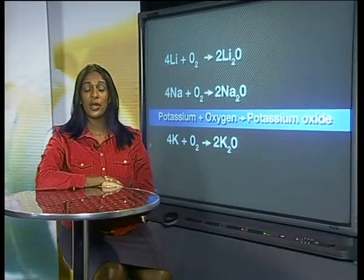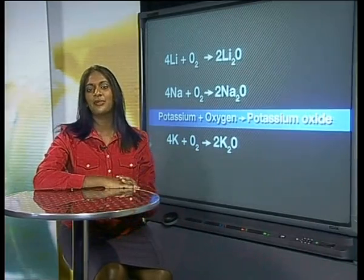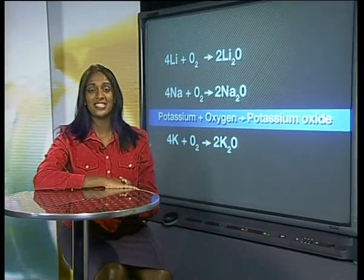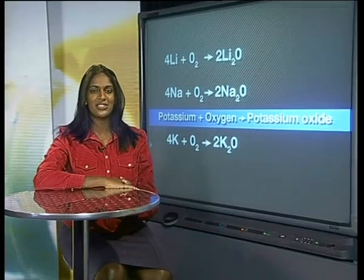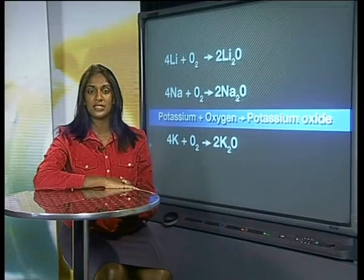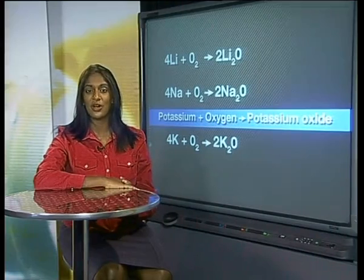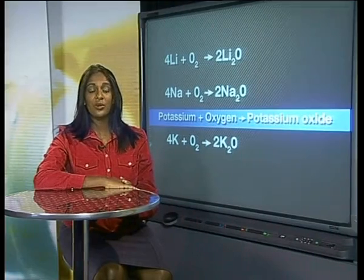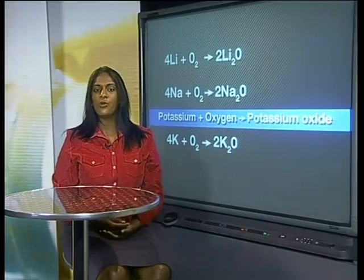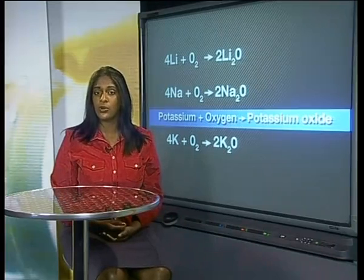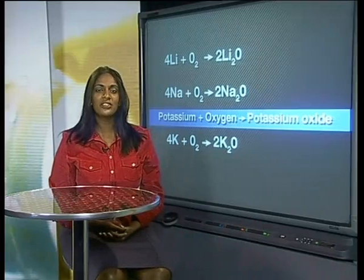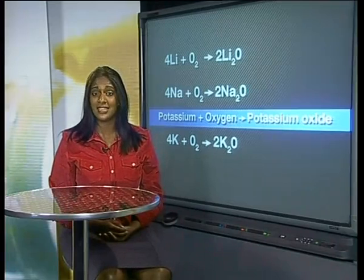Do you remember that when we reacted the alkali metals and oxygen, we saved the metal oxides formed for further testing? Let's use these white substances to determine what the chemical properties of these metal oxides are. To do this, we will test their solubility — in other words, we will check whether they dissolve completely in water or not. We will also test the solution to determine whether it is acidic or basic.